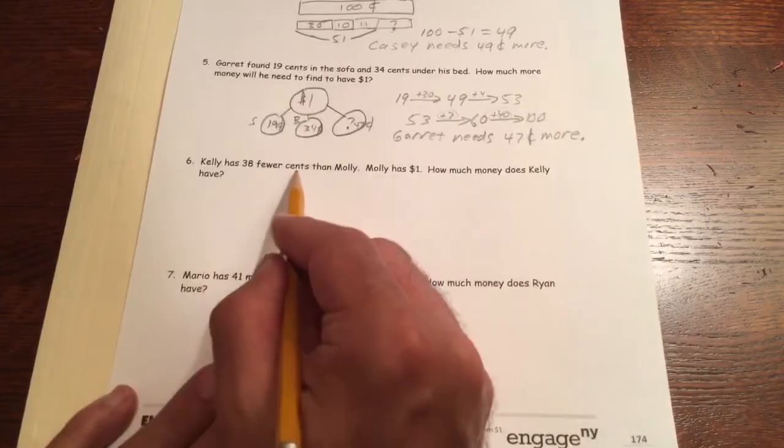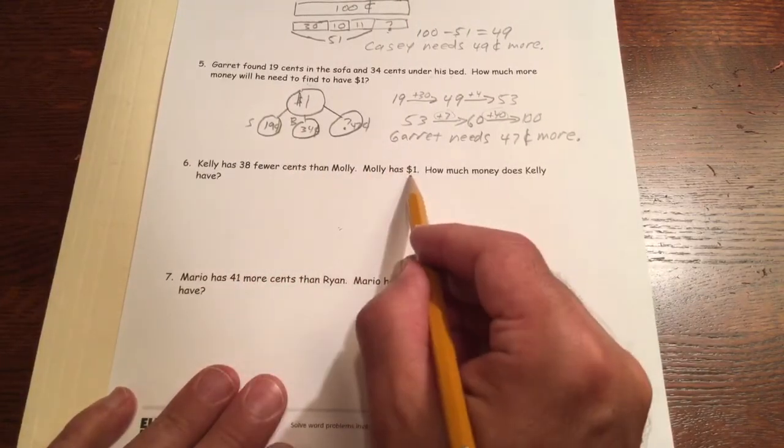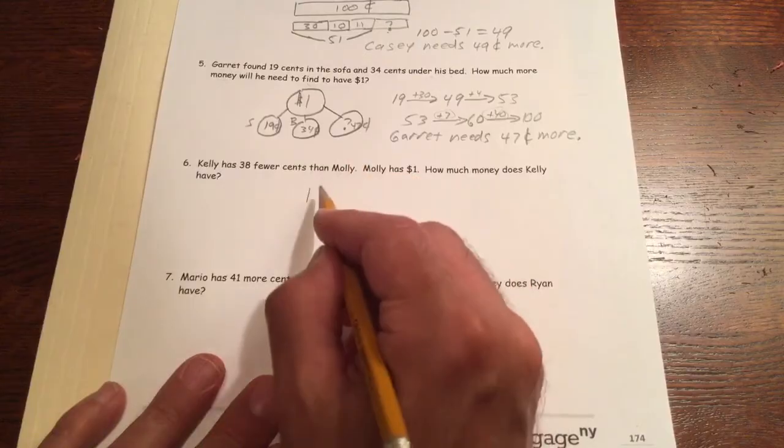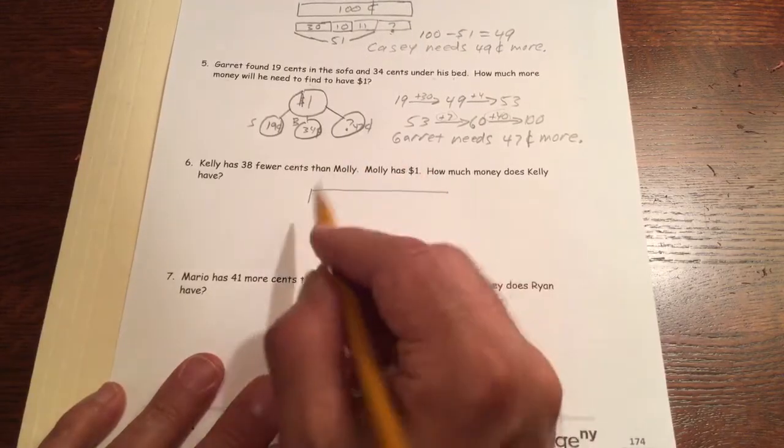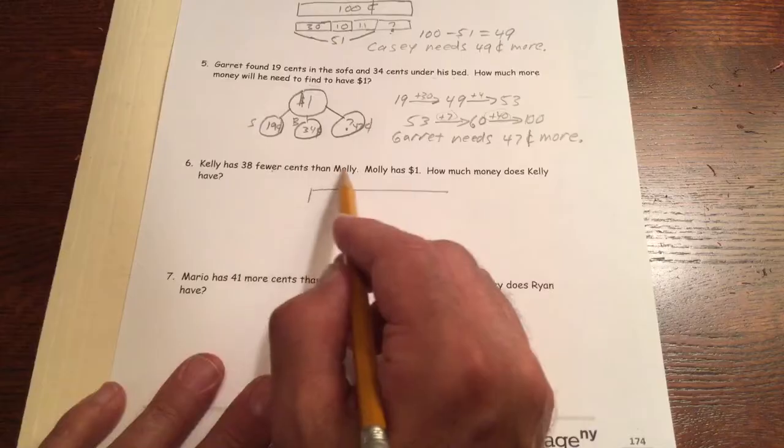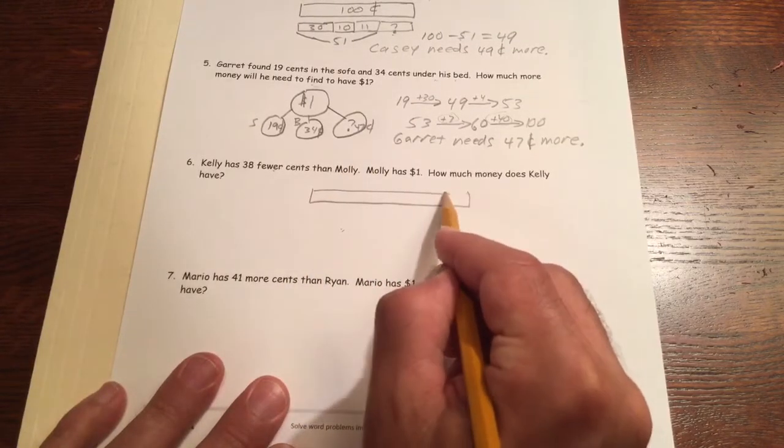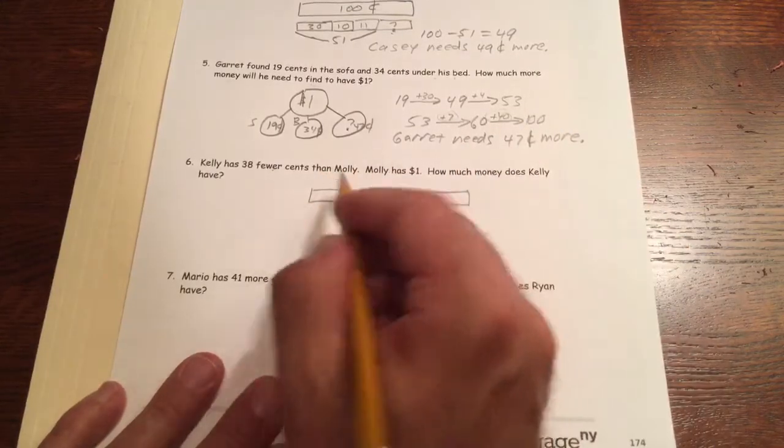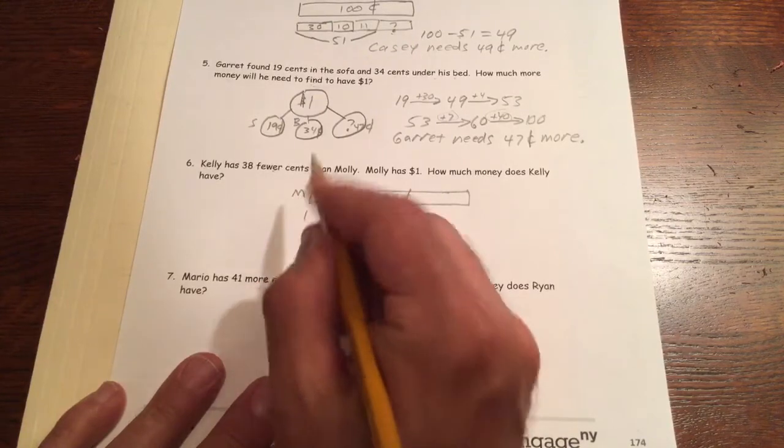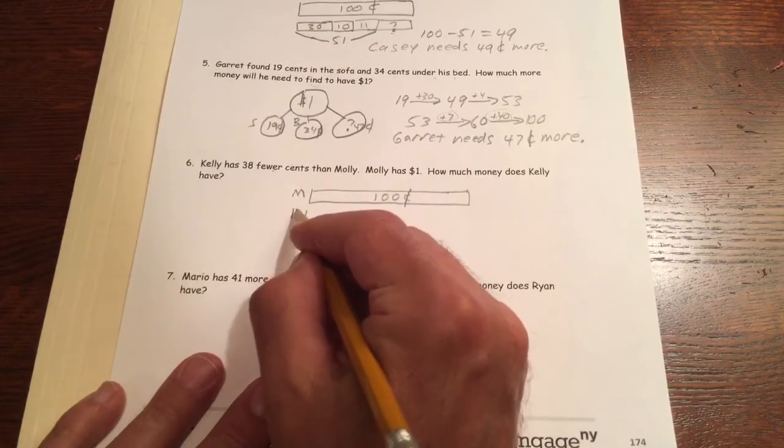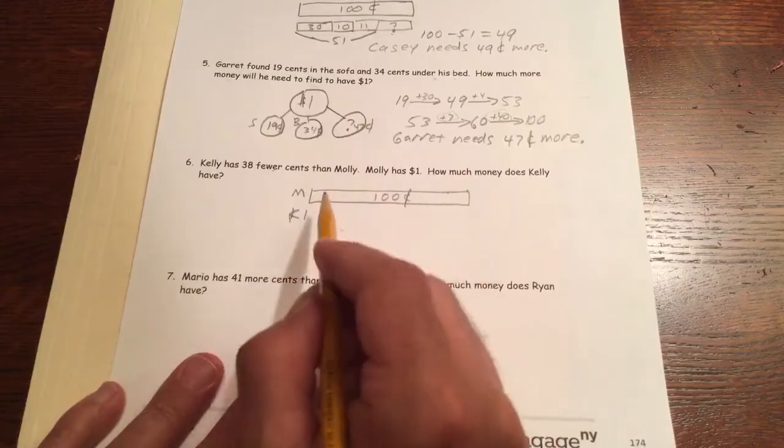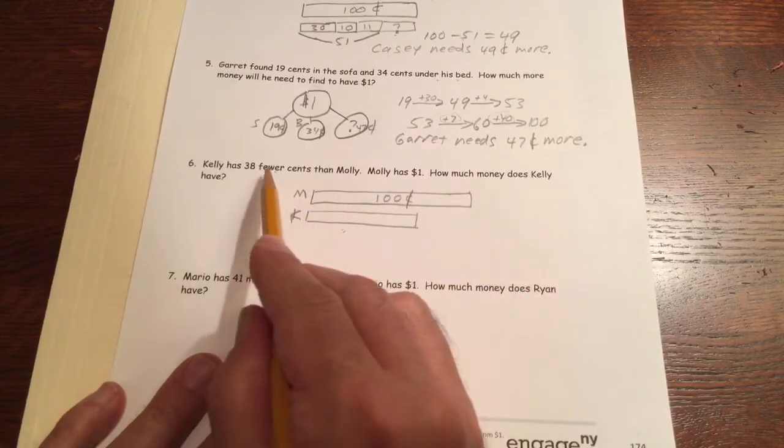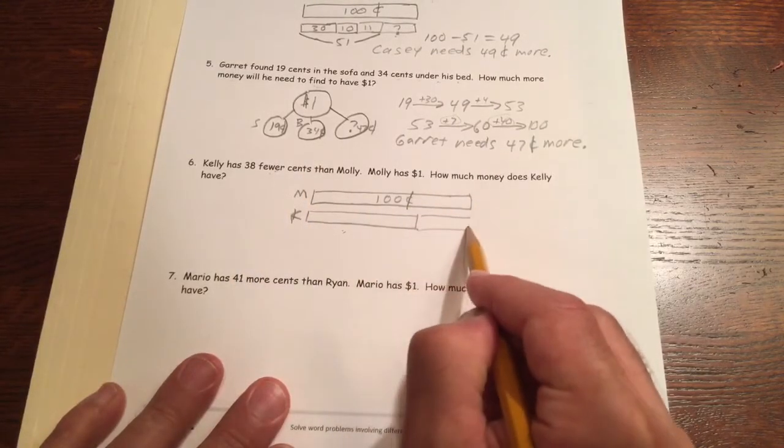Kelly has 38 fewer cents than Molly. Molly has a dollar. How much money does Kelly have? Kelly has fewer so Molly has more. Molly's going to get the big piece of tape and that's the dollar, which is 100 cents. That's Molly's money, this is Kelly's money. I don't know how much Kelly has because it doesn't say that, but it does say it's 38 fewer. So this is the fewer right here.